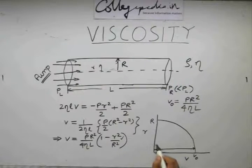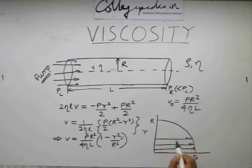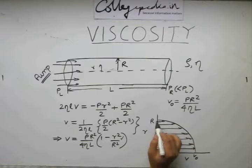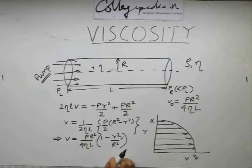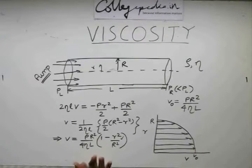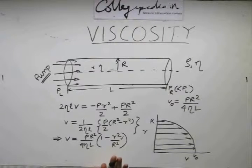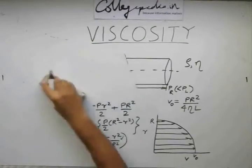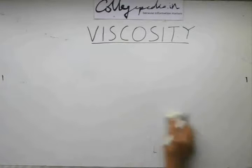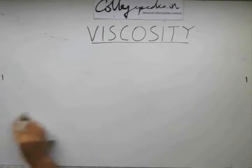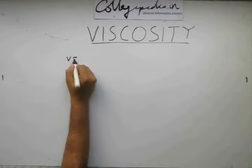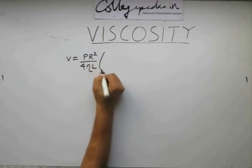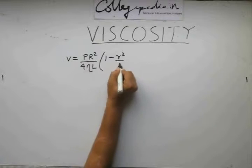The velocity lines are going to be simply like this, at capital R velocity decreases to zero. Let us find a quantity which is very important industrially as well as in engineering applications that is known as the flow rate or the volume flow rate. Our velocity profile was p r square by 4 eta l multiplied with 1 minus r square by capital R square.